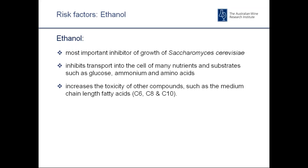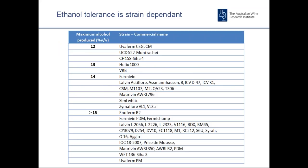Ethanol also increases the toxicity of other compounds, such as the medium chain-length fatty acids — C6, C8, C9 fatty acids. Many other factors are synergistic with alcohol, including pH, temperature, acetic acid, and sugar. High alcohol makes everything else that might be moderately toxic even more toxic. This explains why these compounds might not be problematic early in fermentation but might be problematic when fermentation comes to later stages. Ethanol tolerance is also strain-dependent — some strains can handle much higher alcohol concentrations than others.